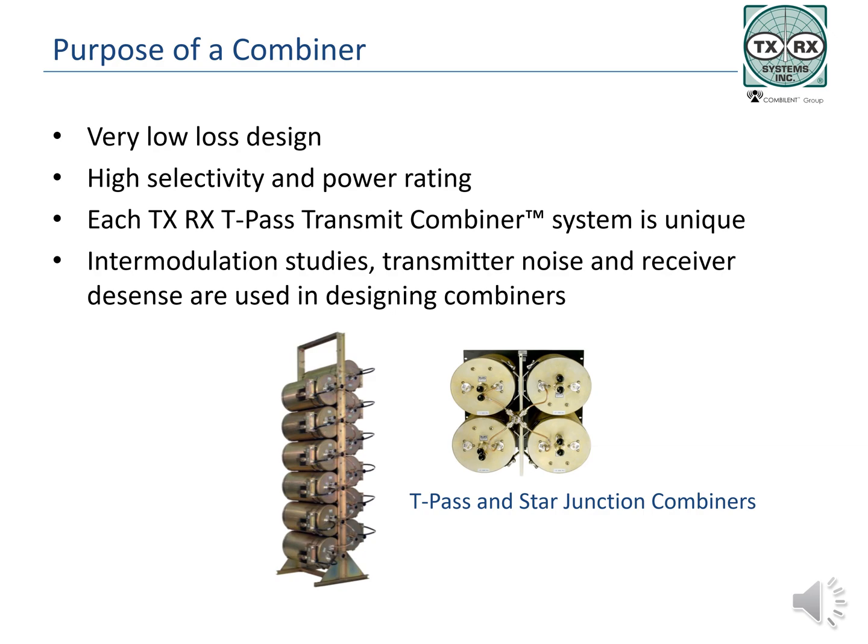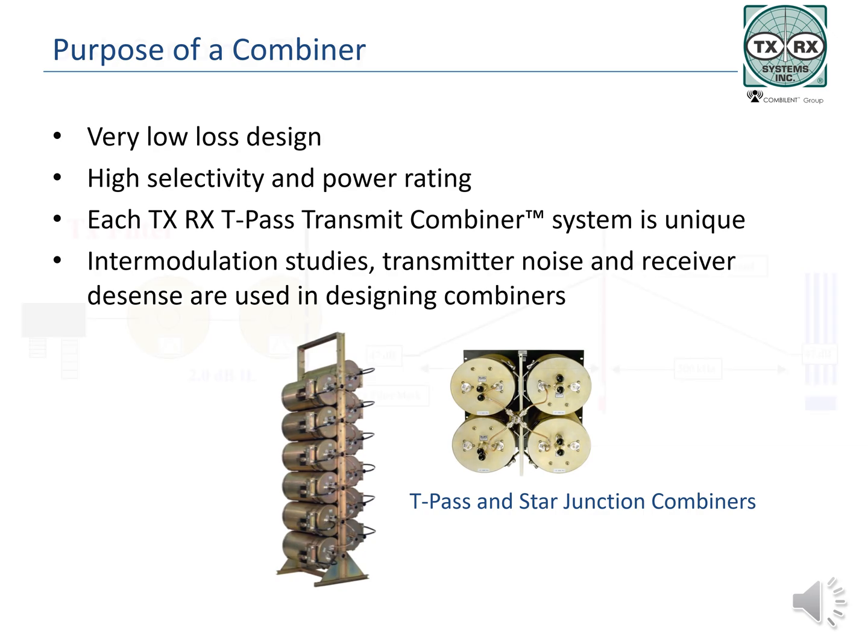In some frequency ranges, such as 700, 800, or 900 MHz systems, channels are laid out for easy combining. At VHF and UHF frequencies, combining is more difficult. Each TXRX combiner at VHF and UHF will be unique based on the channels in the system. The frequency plan must be reviewed to see if it results in intermodulation. Transmitter noise must be evaluated for maximum sideband noise suppression. The receive side of a system must be protected to be certain that coverage will not be reduced through desensitization of receivers.